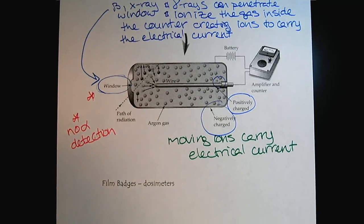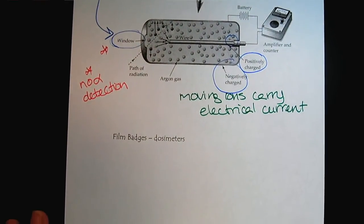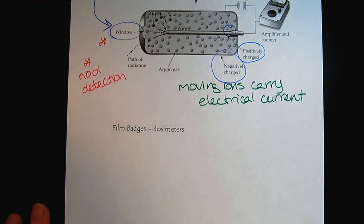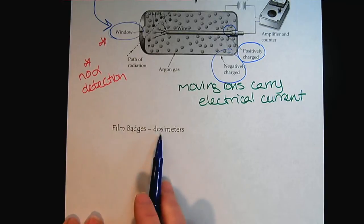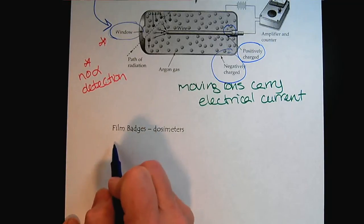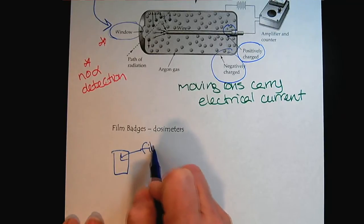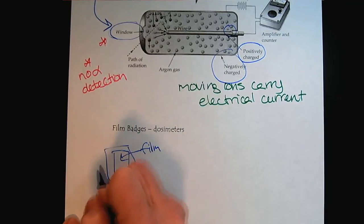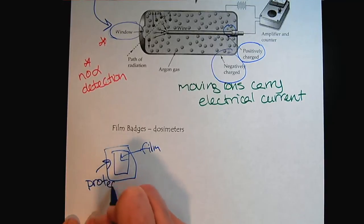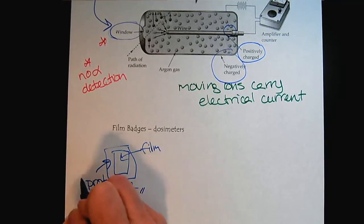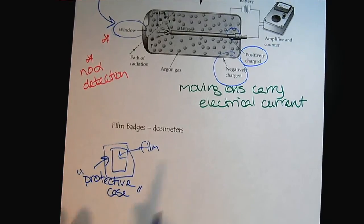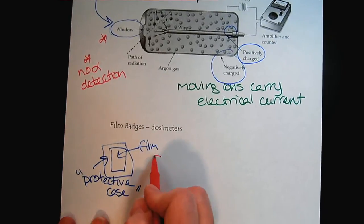Now we'll look at another way to measure radiation exposure, and that's with a film badge or a dosimeter. Basically what happens is that the film badge, the film, is in a case. So there's the film and then it has a protective case to avoid it from light.